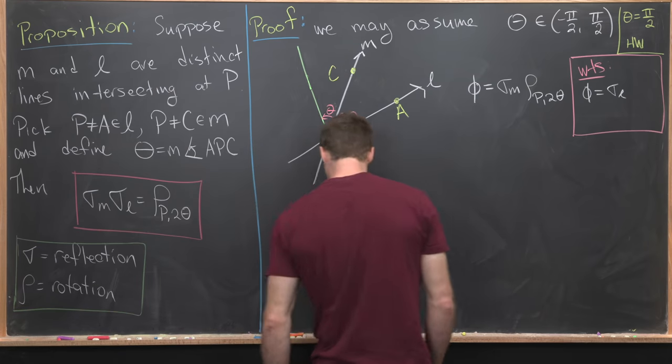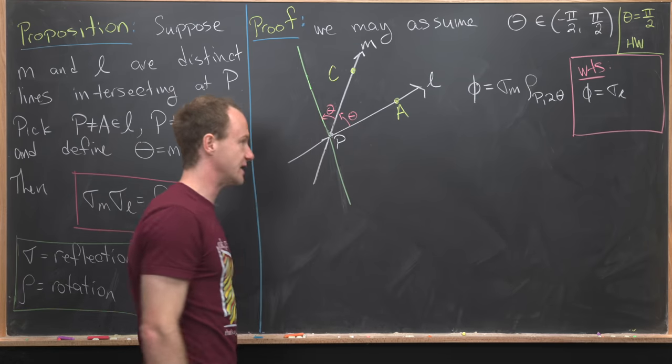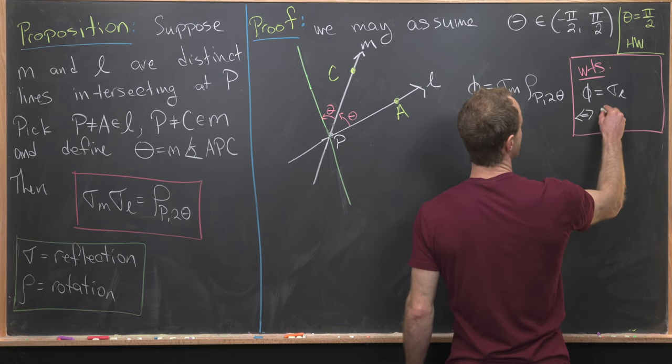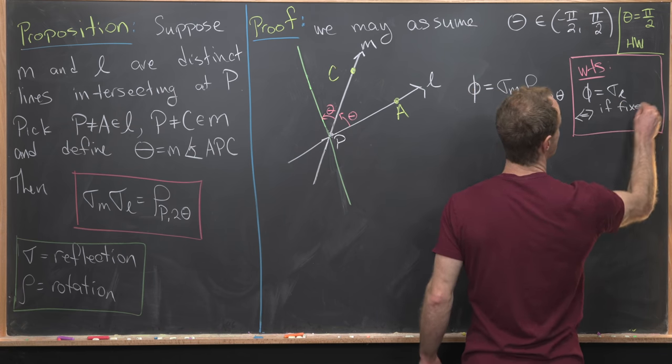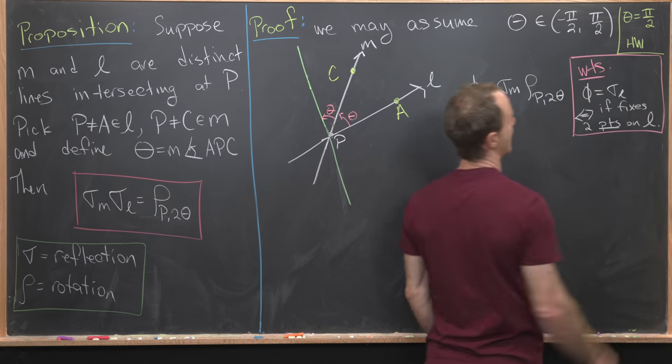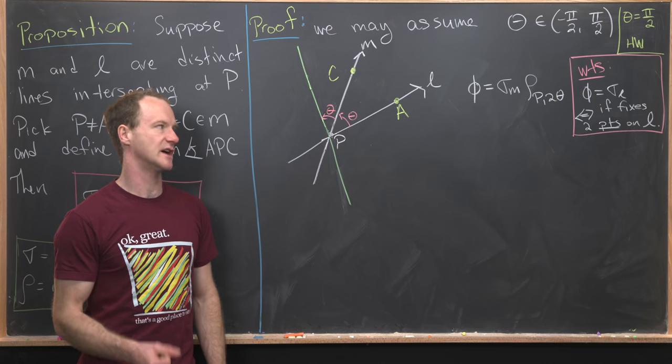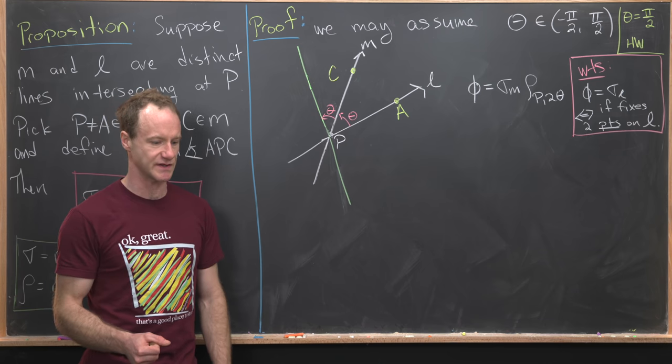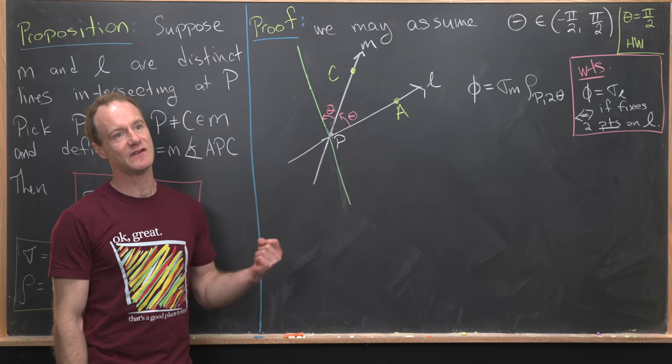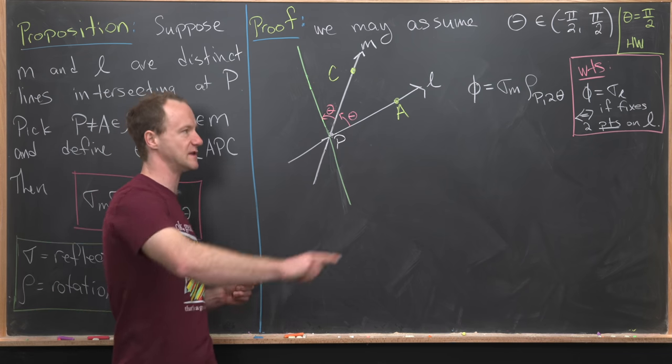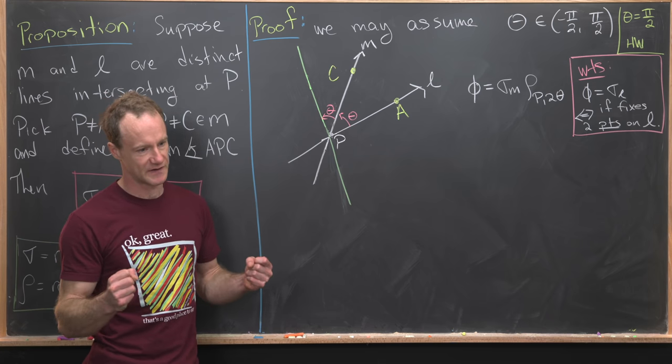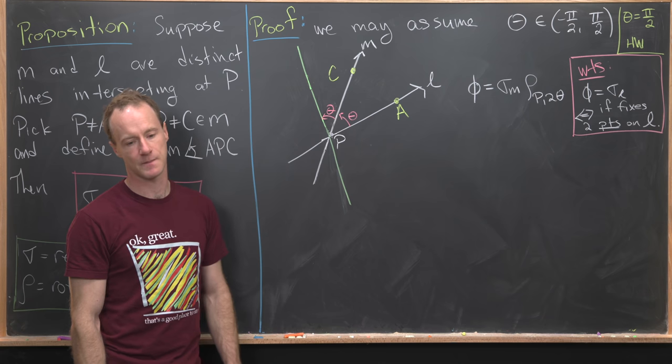But now I want to point out that an isometry is equal to a reflection, if and only if it fixes two points on the line L. So that's a way to characterize reflections. Reflections are the only isometries that fix more than one point. In fact, they fix infinitely many points, all the points on the line L. But the fact that they fix more than one means that we only need to show that this thing fixes two points.